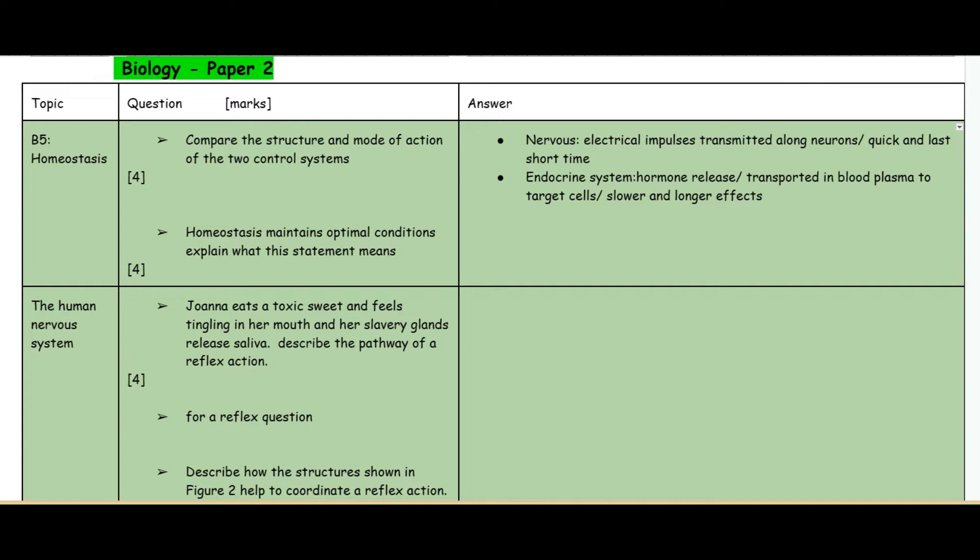The nervous system: the first mark is that electrical impulses are transmitted along the neurons, and the second mark is that they are quick and very temporary, lasting a short time. The endocrine system: the first mark is that hormones are released and transported in the blood plasma to the target cells, and the second mark is that it is slower with longer effects.